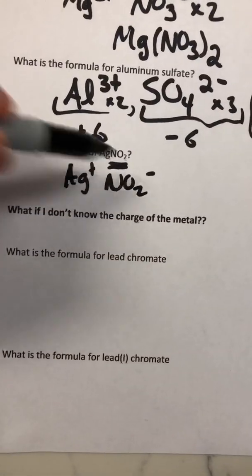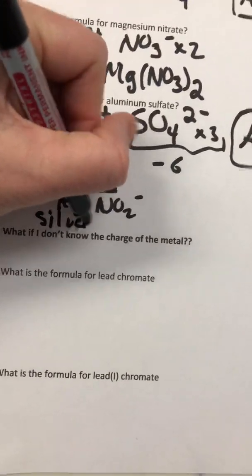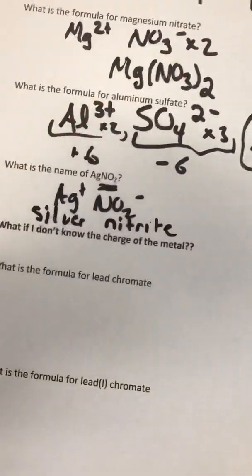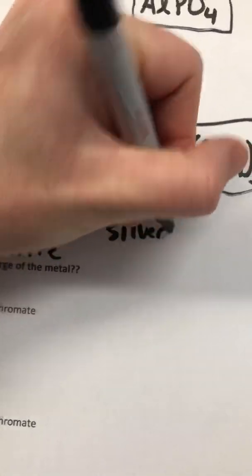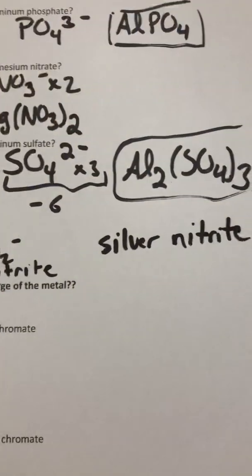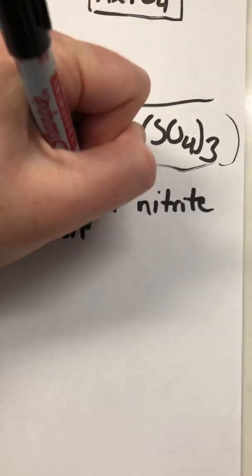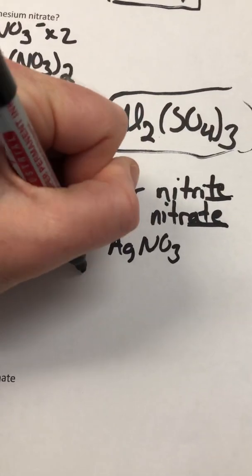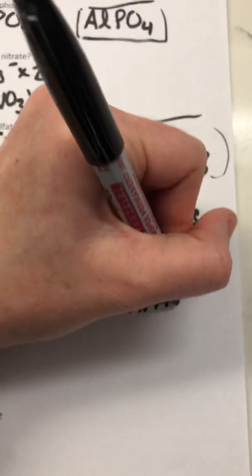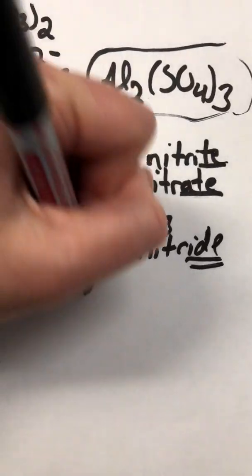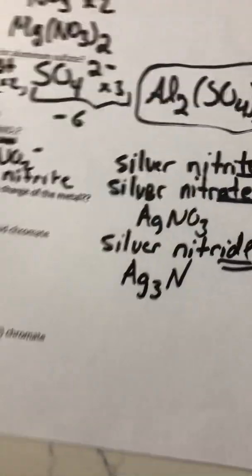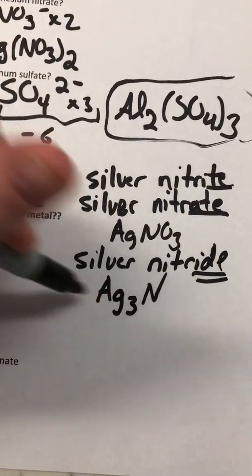Silver nitrite is AgNO2 — you just name what is there. Not to be confused with silver nitrate, which is AgNO3. And not to be confused with silver nitride: nitride has a three-minus charge, so you'd need three silvers to cancel it out, giving Ag3N. Silver nitrite, silver nitrate, and silver nitride are all different — and these distinctions matter.